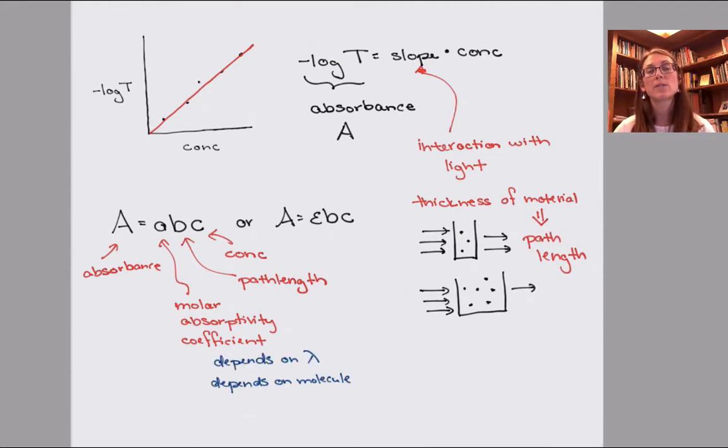The molar absorptivity coefficient depends upon the wavelength and depends on what the molecule is. The path length for most standard spectrometers is going to be one centimeter. And so for our purposes, unless I tell you otherwise, you can just assume that that path length is one.